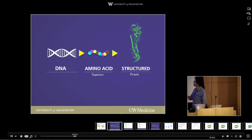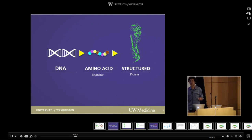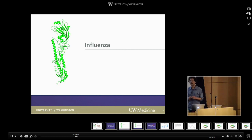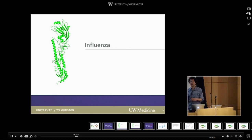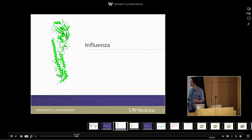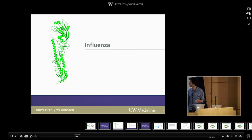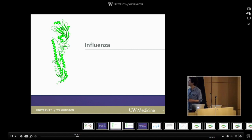This is called the central dogma of molecular biology — the information goes from DNA to amino acid sequence to proteins. But if we understood how to go from DNA to amino acid sequence to proteins, you could imagine running this process in reverse. This protein here turns out to not be a very nice protein — it's the protein on the surface of the flu virus, the influenza virus. This actually happens to be the protein on the surface of the 1918 pandemic influenza virus, but all influenza viruses have a very similar protein on their surface.